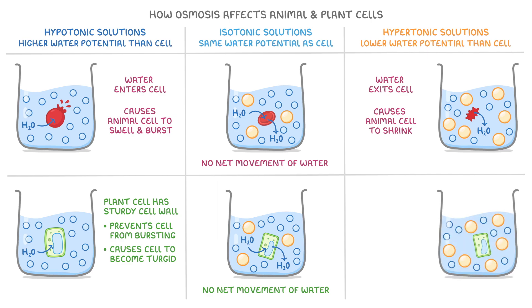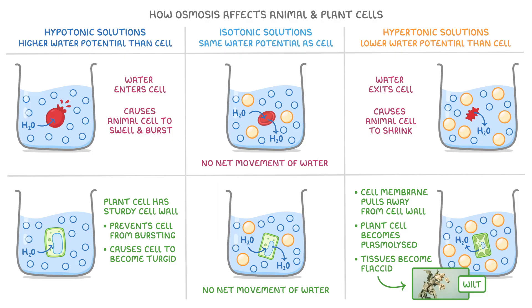If we did the same thing with this plant cell, water still leaves the cell, but this time the cell membrane pulls away from the cell wall, and as a result, the plant cell becomes plasmolyzed. And when this happens to lots of cells in a plant, the tissues become flaccid. And this is exactly what makes a plant wilt when it doesn't have enough water.